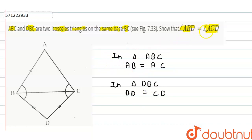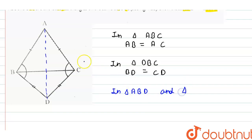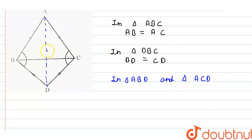So now we have to prove angle ABD is equal to angle ACD. Just draw a line from point A to D. Now in triangle ABD and triangle ACD, we have drawn line AD, so AD is common in both triangles. We can write that AD is equal to AD because this is common.